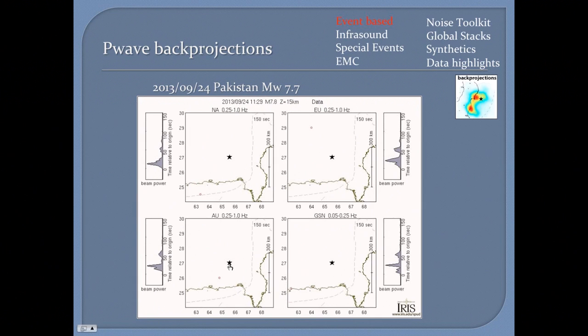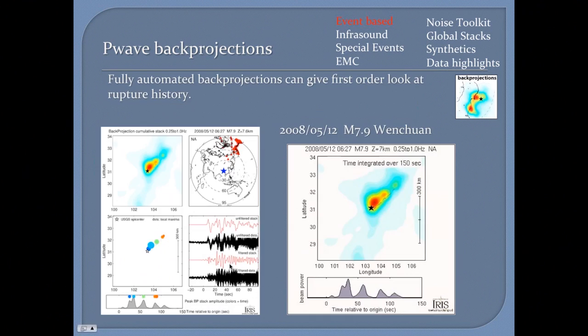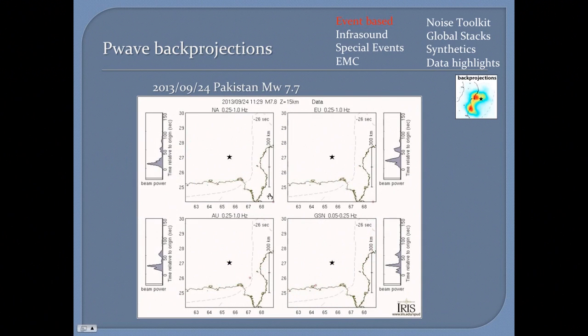What you want to see in back projection is consistency. If you see the same features showing up at the same location and time at different arrays using data from different azimuths, that usually is an indication of robustness. However, there are a lot of limitations of back projection. For example, depth phases will often cause interference and swimming of artifacts in the direction of the arrays.